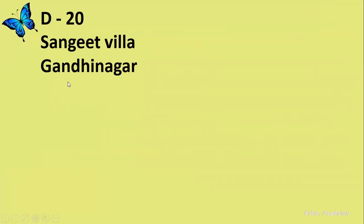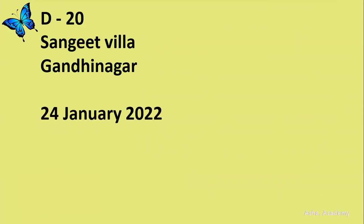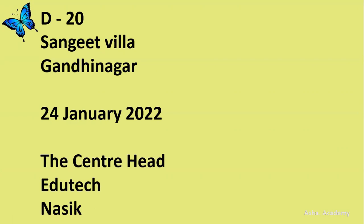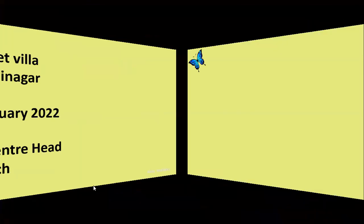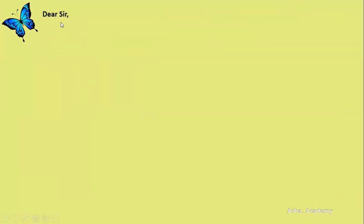The very first thing is the sender's address. You don't want to make use of punctuation here — nowadays it has become obsolete, so it's not necessary. Leave a line and then go for the date, written as 24 January 2022, or January 24, 2022. Then the receiver's address: the centre head, EduTech, Nasik. And then write the salutation: Dear Sir or Madam. Then the subject: Information on short-term computer courses.